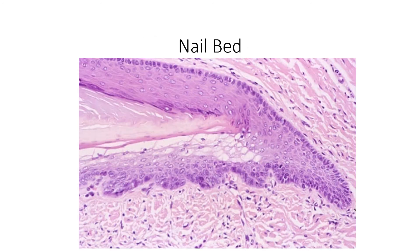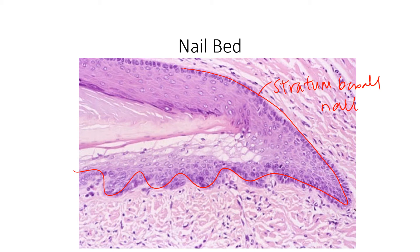Looking at another image, you can see stratum basale coming around here, forming the nail follicle. The rubbery fingernail or toenail is actually a mixture of cartilage and keratin — that's why nails are somewhat flexible.